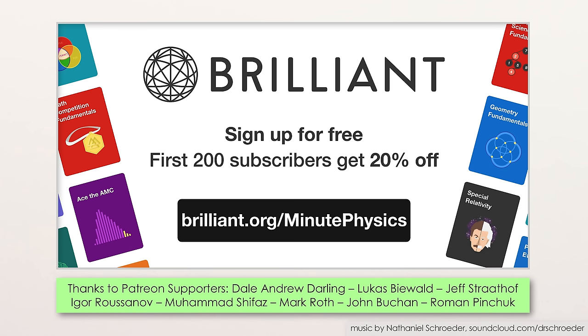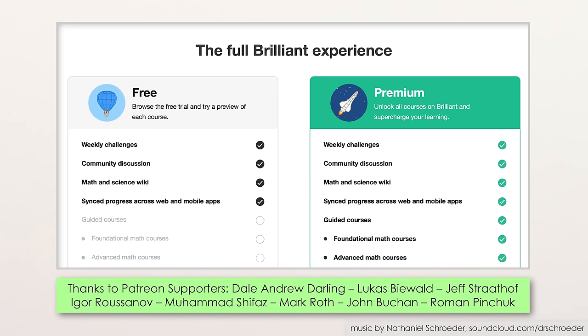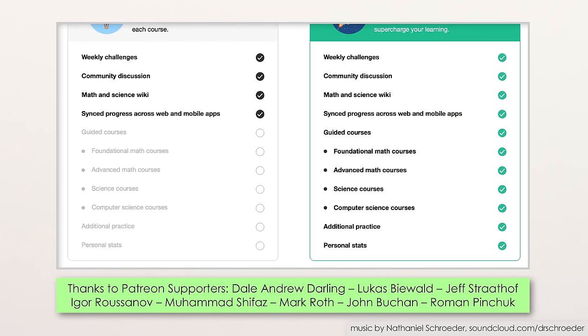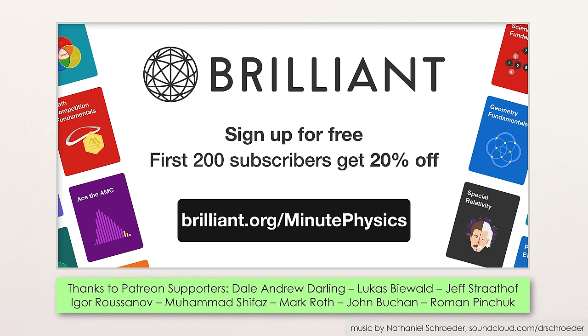And the first 200 people to go to Brilliant.org slash MinutePhysics can get 20% off of a premium Brilliant subscription with access to all of Brilliant's courses and puzzles. Again, that's Brilliant.org slash MinutePhysics which gets you 20% off premium access so you can seriously hone your math and science skills, and it lets Brilliant know you came from here.